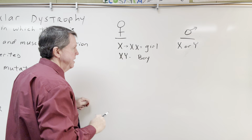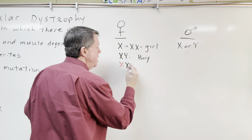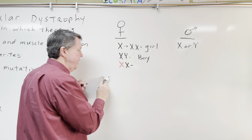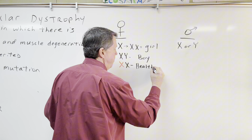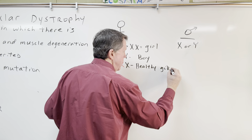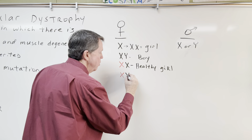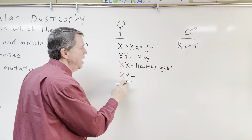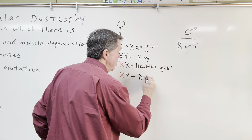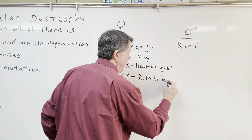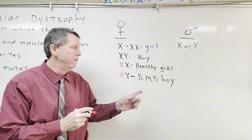Now, if mom donates a defective X chromosome and dad donates a healthy X chromosome, dad's healthy X will cover up the defect — resulting in a healthy girl. However, if mom donates a defective X chromosome and dad donates a Y, there's nothing to cover up that defect, and you end up with a boy who has Duchenne's muscular dystrophy. That's how it's passed on through inheritance, though it can also result from a spontaneous mutation.